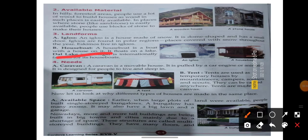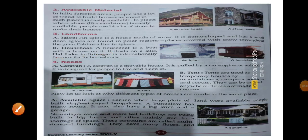Second — houseboat. Houseboat ek aisa ghar hota hai jo paani ke upar hota hai. A houseboat is a boat with a house on it — jis ko hum kashti kehte hain. Yeh ek boat hoti hai jo ek ghar ki surat mein hoti hai, jo kisi lake mein float karti hai. Dal Lake, which is in Srinagar, is internationally famous for its houseboats. Wahan pe log bahut zyada attract hote hain — worldwide yeh is cheez ki wajah se famous hai because of the houseboats.